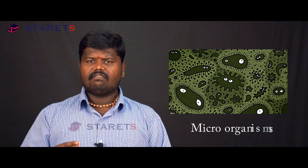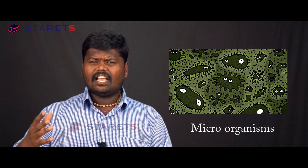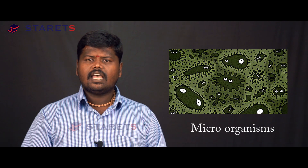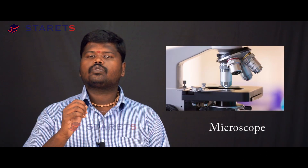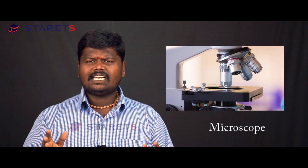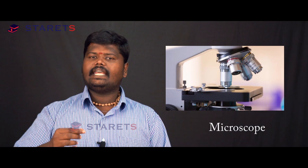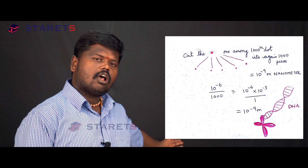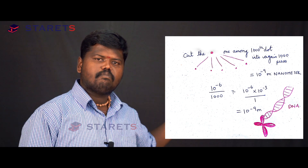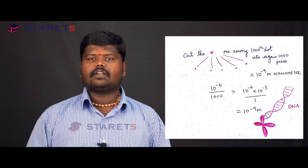The micrometer is the size of a bacterium. That's the reason bacteria are called microorganisms — not only bacteria, but viruses and fungi like yeast are all called microorganisms because they are the size of a micron or less. The instrument used to visualize microorganisms is called a microscope. Now, taking that thousandth dot and cutting it into a further thousand gives 10 to the power minus 6 divided by 1000, which equals 10 to the power minus 9 meters — called a nanometer. This nanometer is the size of a DNA molecule.